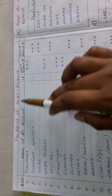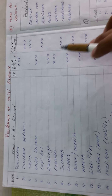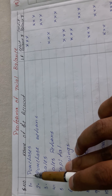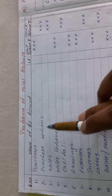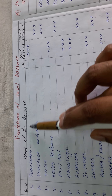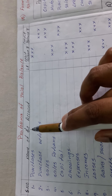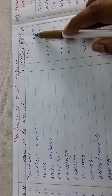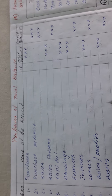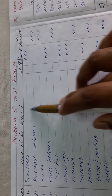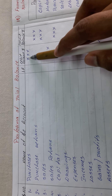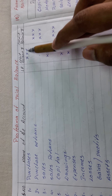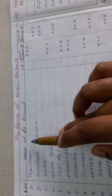This is the pro forma of a trial balance — this is how the trial balance will be looking. In the trial balance we have a serial number, name of the account, LF, debit balance, and credit balance. I have drawn lines only for your understanding; these are not lines you are required to draw. The X symbols represent amounts — just a cross symbol representing any amount value.